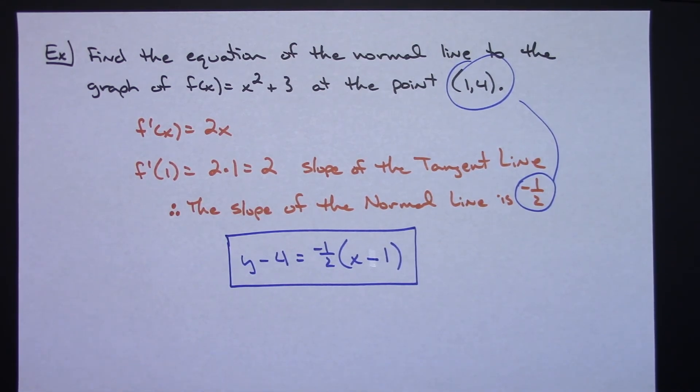But just one real quick example of how you can write that equation of the normal line if you're given the graph and a point on that line. Thanks for watching and be sure and share with your friends. Thanks!